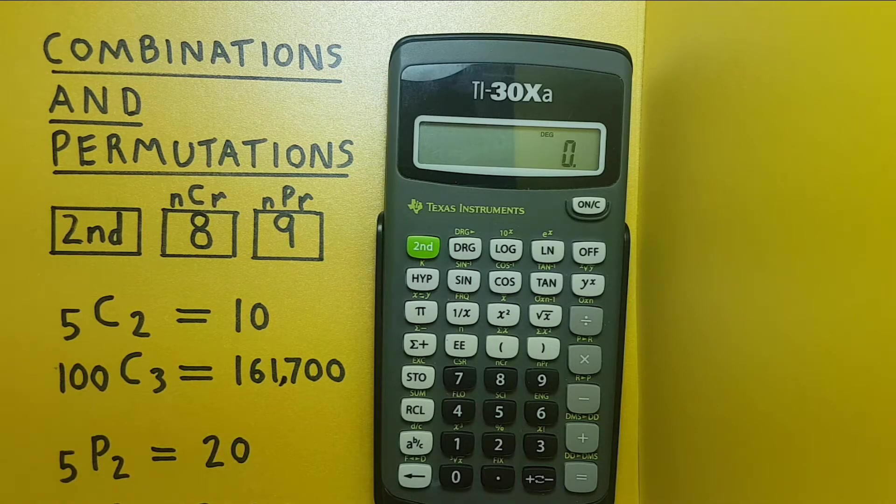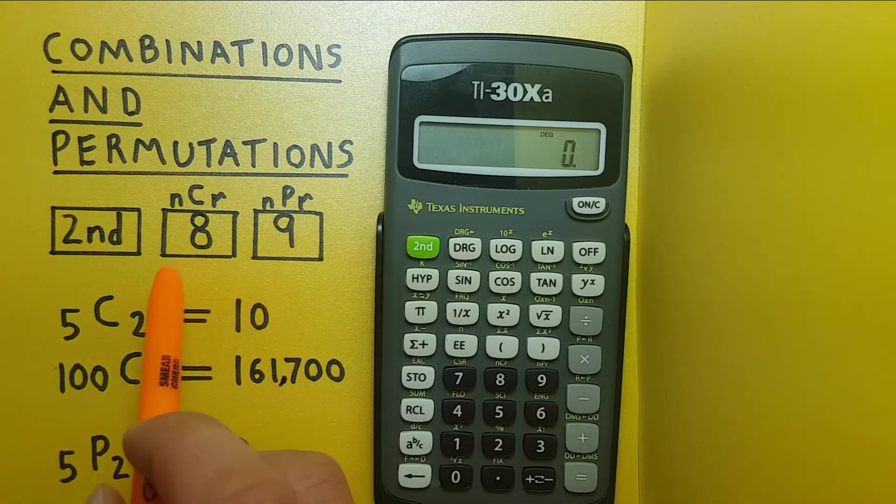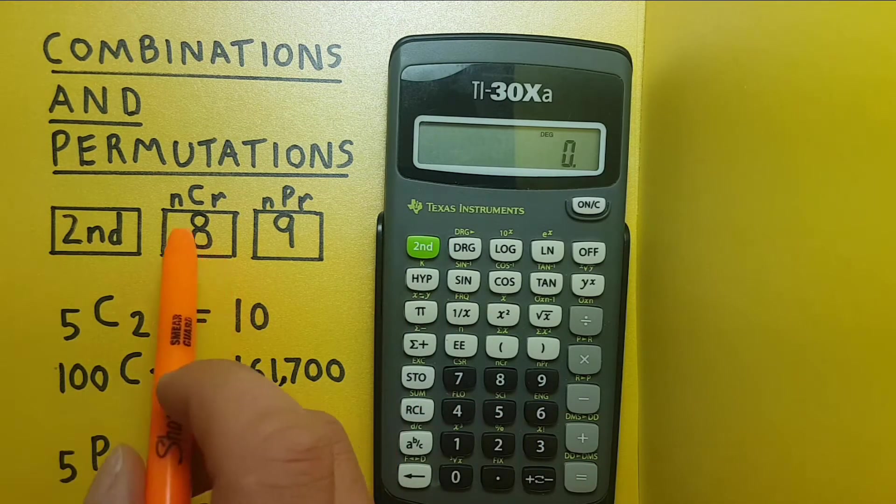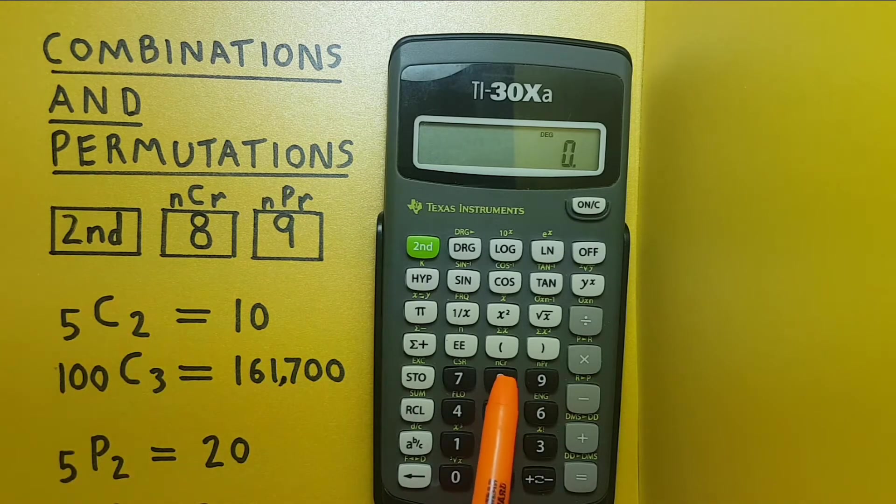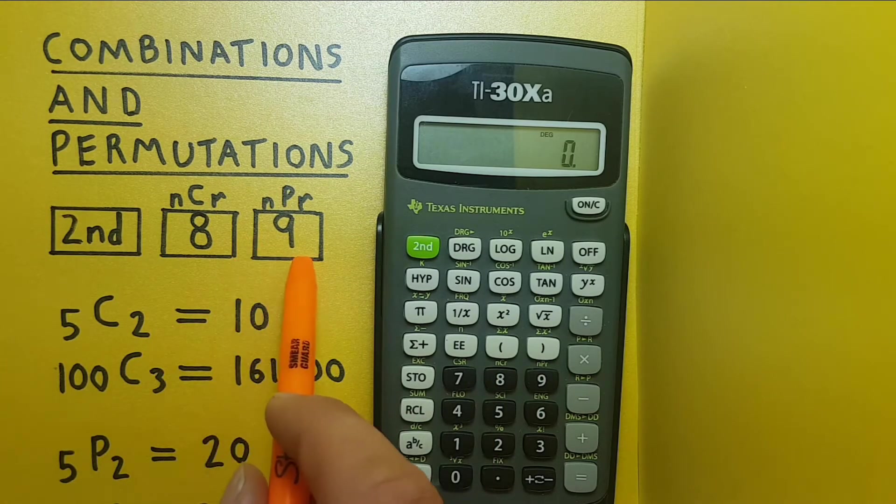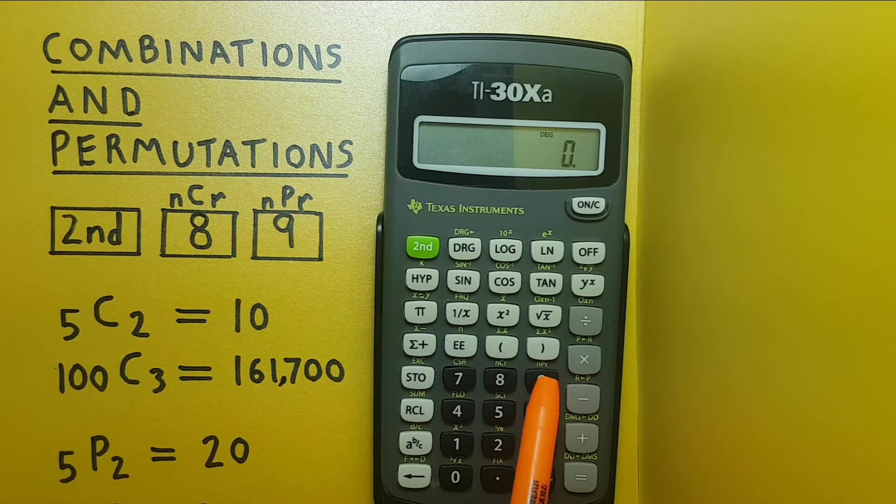To do this we'll be using the following keys. The second function key located here. The 8 key which has the second function combination located here and the 9 key which has the second function permutation located here.